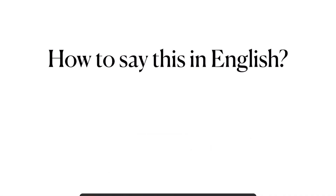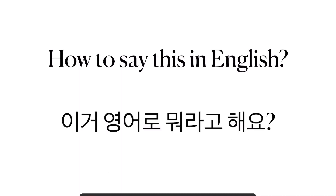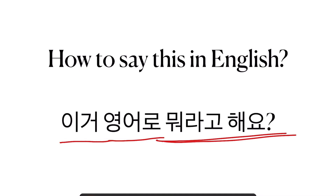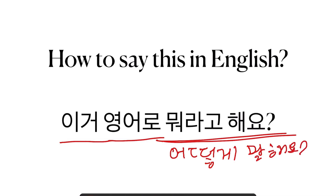How to say this in English? When you don't know a word in Korean, you can ask your teacher: how do I say this in English? 봅시다. 이렇게 말할 거예요: 이거 영어로 뭐라고 해요? 아니면 어떻게 말해요? 뭐라고 해요? 둘 다 괜찮아요.